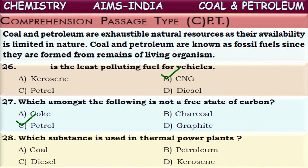Next question: which substance is used in thermal power plants? Thermal power plants are stations where electrical energy is produced from heat energy — a fuel is burned to produce heat, which is then converted to electrical energy. Out of the four options, coal is used for the production of electricity in thermal power plants. Only coal is used for this purpose.